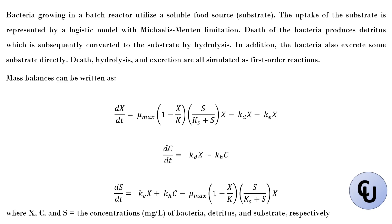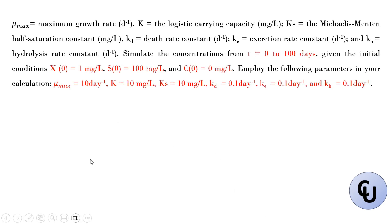Then you have the parameters. μmax is the maximum growth rate. K is the logistic carrying capacity. Ks is the Michaelis-Menten constant. Kd is the death rate constant. Ke is the excretion rate constant. Kh is the hydrolysis rate constant. And you have to simulate the first 100 days of the reactor.